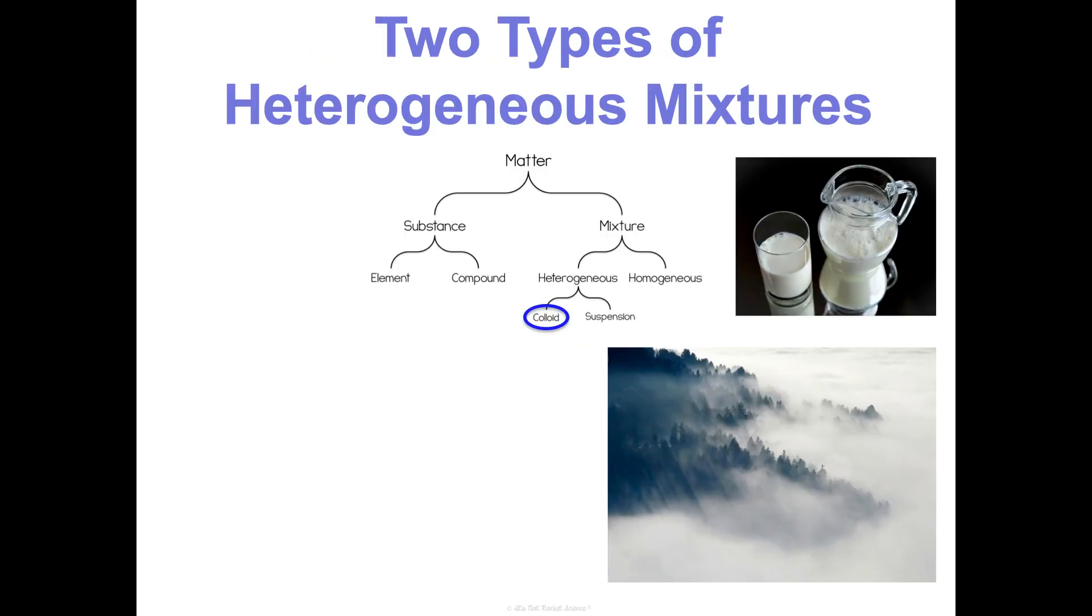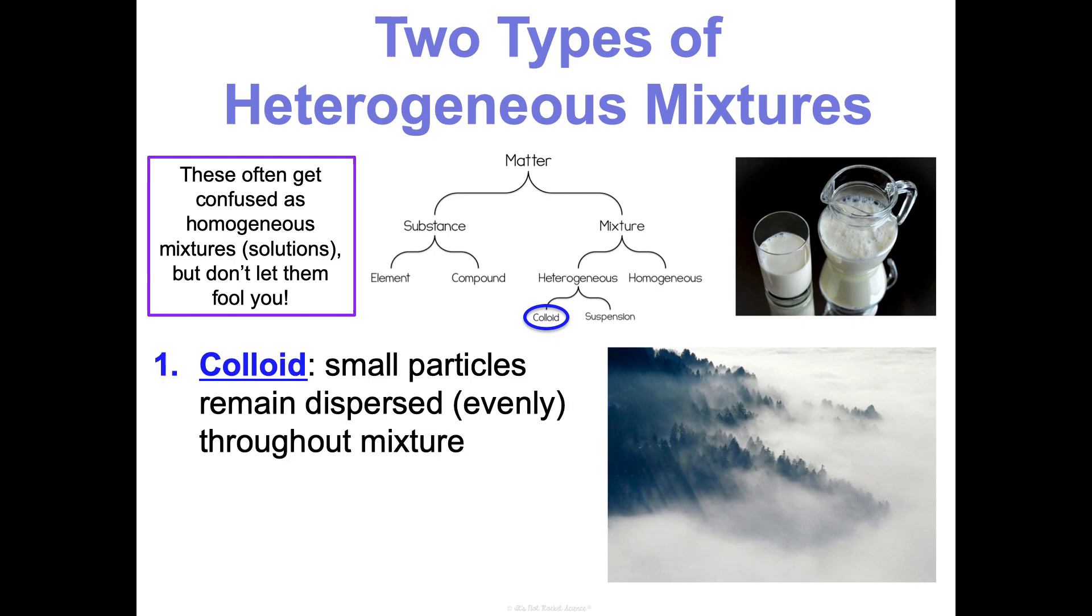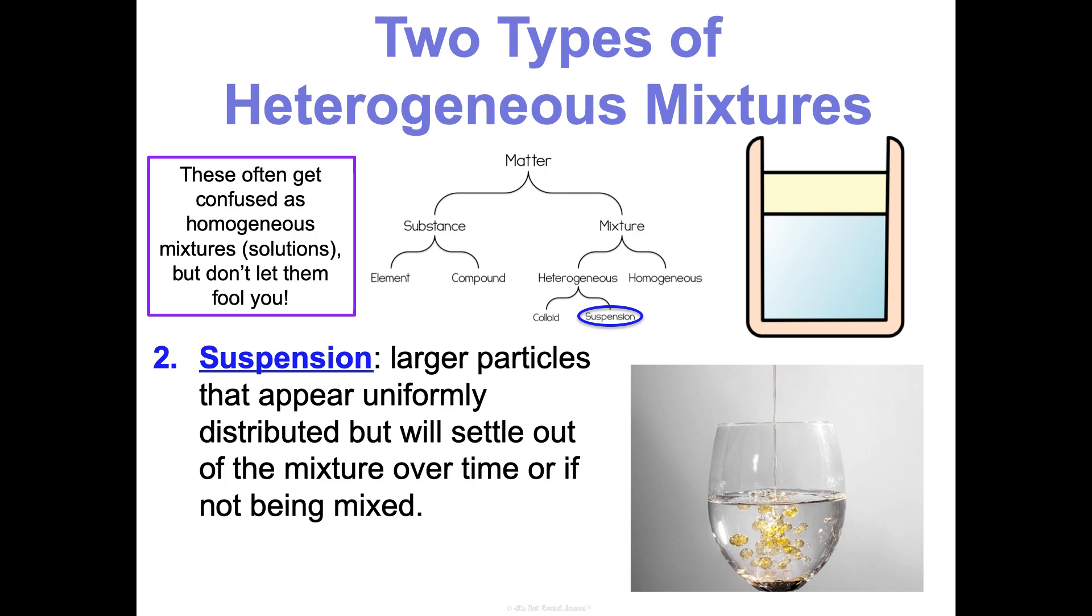We can further subdivide heterogeneous mixtures if you'd like. And these types of heterogeneous mixtures often get confused as homogeneous ones. So you've got to kind of watch out for them and not let them fool you. But there are colloids and suspensions. So a colloid is when small particles remain dispersed, but they often are evenly dispersed throughout the mixture. They are larger, though, than what you would see in a solution, which is what makes it a heterogeneous mixture. Things like fog, milk, humid or dusty air, these are colloids. Whereas a suspension has larger particles that appear uniformly distributed, but will settle out over time. So like oil and water, sand and water, muddy water, these are things that we can see a lot more clearly. Suspensions are a lot easier to identify.